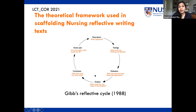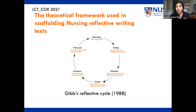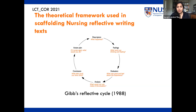This is the Gibbs Reflective Cycle, a popular framework used to scaffold students through reflection. Students are supposed to describe what happened, share their feelings, evaluate the experience, then move through analysis and conclusion, and finally discuss what they would do differently — what they've learned from reflecting on that particular experience.